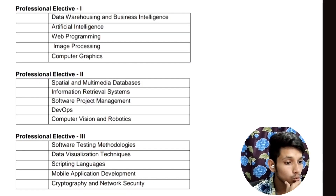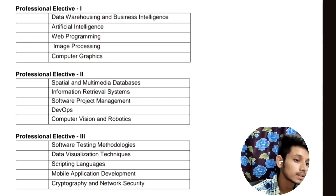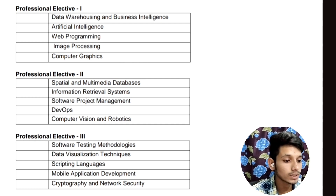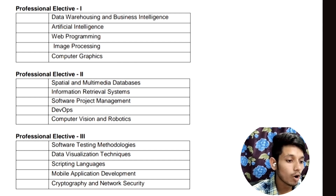In Professional Elective 1, you will have the subjects Data Warehousing and Business Intelligence, Artificial Intelligence, Web Programming, Image Processing, and Computer Graphics. In Professional Elective 2, the subjects will be Spatial and Multimedia Databases, Information Retrieval Systems, Software Project Management, DevOps, and Computer Vision and Robotics.